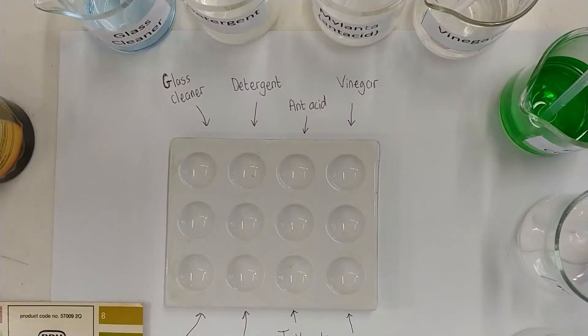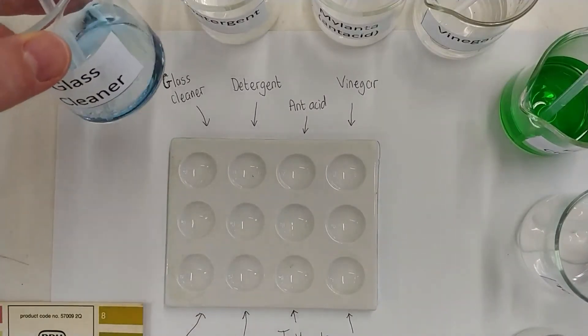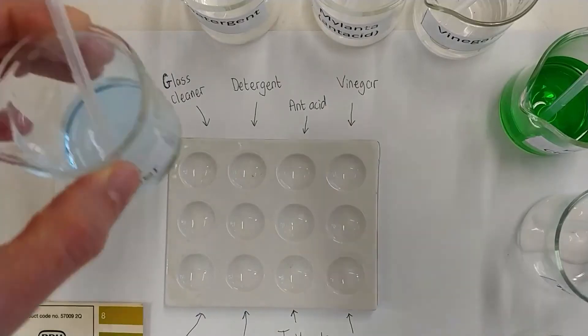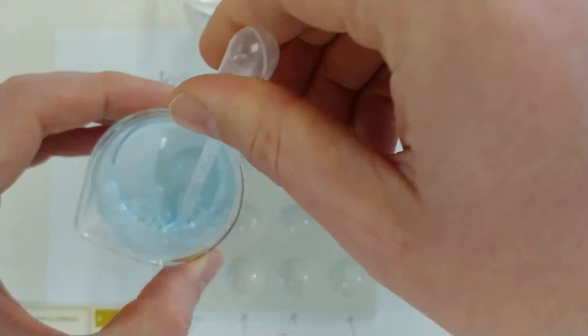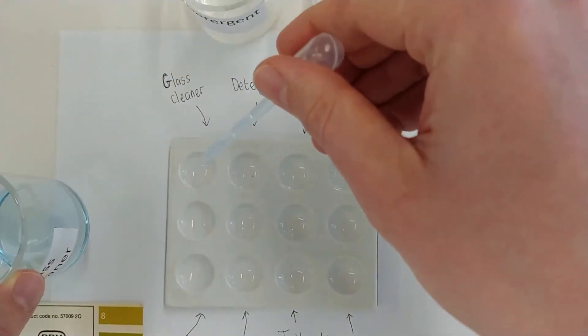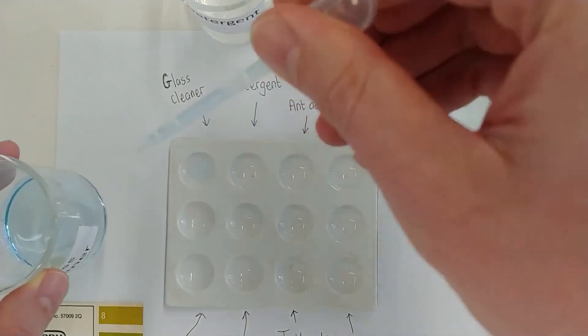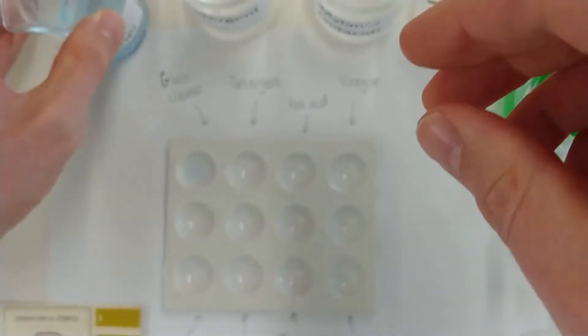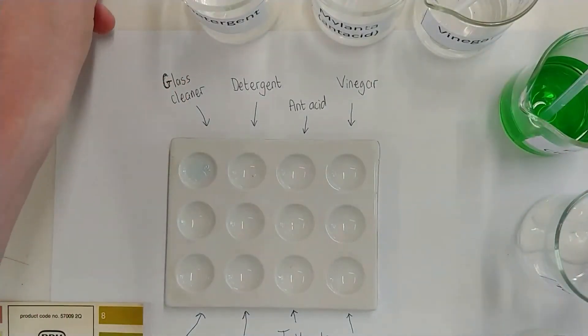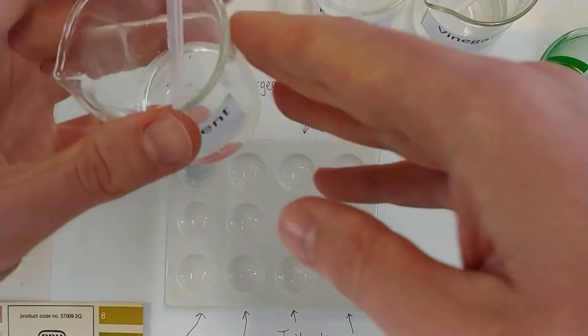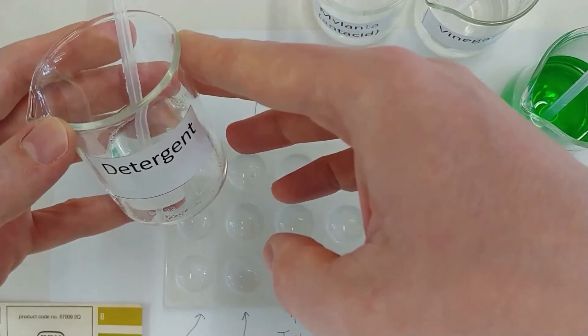Well, let's see how well Mr. Archer does the Universal Indicator experiment. Here you can see he's collected certain chemicals. Glass cleaner in this case. You may notice, despite the safety video, one of the requirements has possibly not been met.